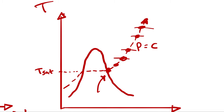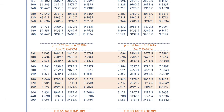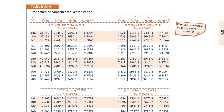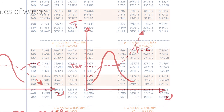In the 1 bar pressure subtable, I want internal energy — the second column — at 200 degrees Celsius. Therefore, the internal energy at state 1 is 2,658.1 kilojoules per kilogram. With that, we are halfway there.